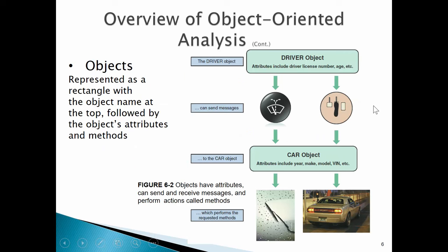Here's a good example of an object, represented with a rectangle. The object name is at the top, followed by the object's attributes and methods. You can see we have this object called driver — attributes of the driver object might be their driver's license number, their age, their experience driving, whether they have insurance or not.